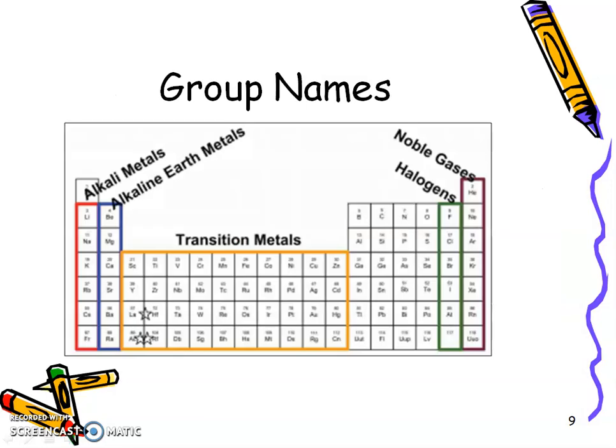Group names. Then he talked about how the first group has a particular name, the second group has a particular name. You already know about the transition metals, halogens, and noble gases are what we're going to talk about here.